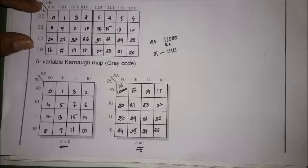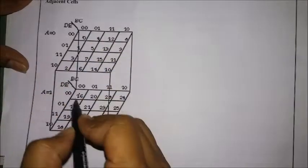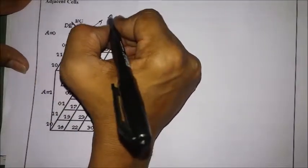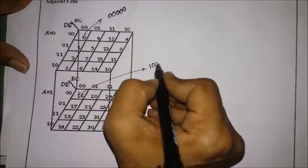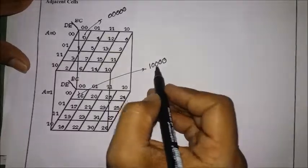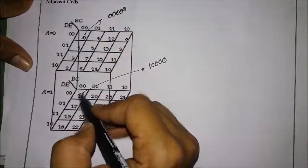Let's see the orientation. Cell 0 is five zeros in binary, and cell 16 is binary 10000 — only one bit changes. Therefore, 0 and 16 are adjacent cells.